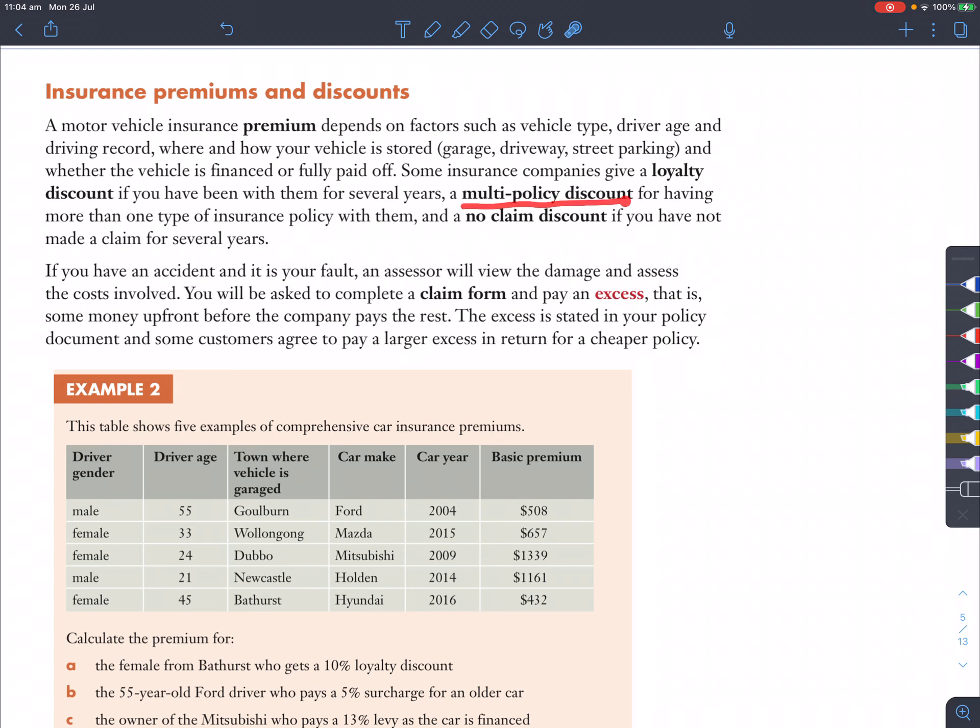A multi-policy discount can be offered for having more than one type of insurance policy with them, so you're spending more money with that company, and a no-claim discount, meaning you haven't crashed and you haven't made a claim to pay an excess fee for crashing someone else's car, and that's a good thing. But if you have an accident and it's your fault, an assessor will view the damage and assess the cost involved. You'll be asked to complete a claim form and pay an excess.